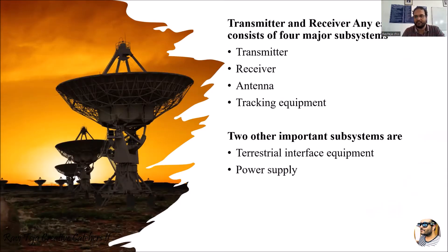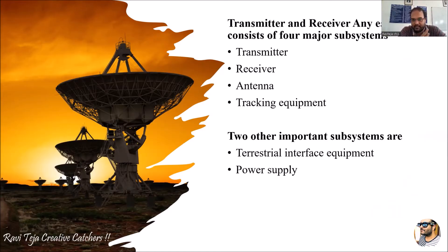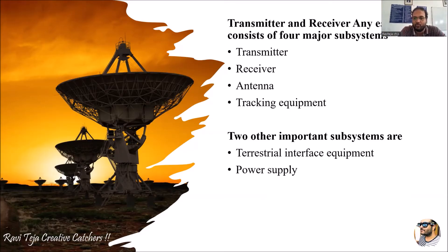The transmitter and receiver of any earth station consist of four major subsystems. We have already seen this topic: the earth station consists of four major subsystems — one is the transmitter, second is the receiver, third is the antenna, and the fourth is the tracking equipment. We need a tracking antenna so that it will locate or discover the particular satellite and where it is moving. Along with these four subsystems, we have two more important subsystems: the terrestrial interface equipment and the power supply system.